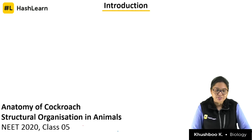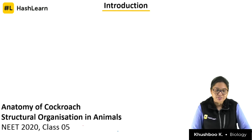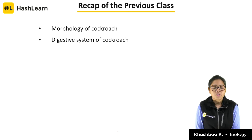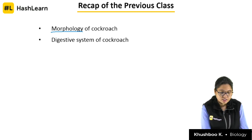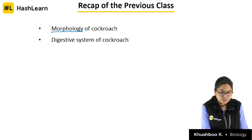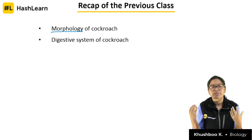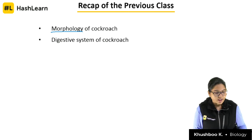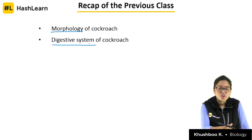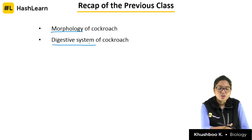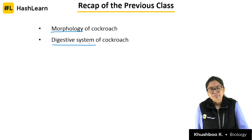Hello Jayesh, I am very glad to see your name once again — good afternoon. Now on your screen is the recap of the previous class. The last class was mostly devoted to the morphology of cockroach — how it looks externally, the division of the body into head, thorax, and abdomen, wings, location, the structure of legs. We also covered the digestive system. Based on the morphology you were given the CPP, and the question where most of you went wrong is now on your screen.